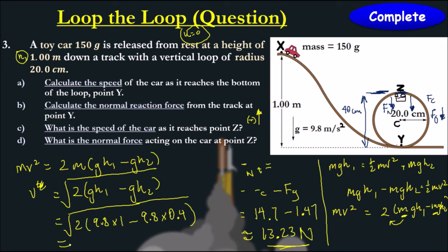Let's see what answer we get. We get a value of 3.43, approximate, if we do it to 3 sig figs, meters per second. So that's the speed the car is at point z.